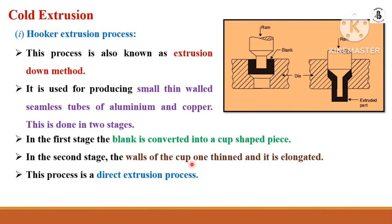Let us start with the first one — hooker extrusion process. This process uses a downward method. You can see the die material, and according to the complexity of the shape it will be manufactured. The black color represents the blank or raw material, and according to that shape we select the die and the ram.